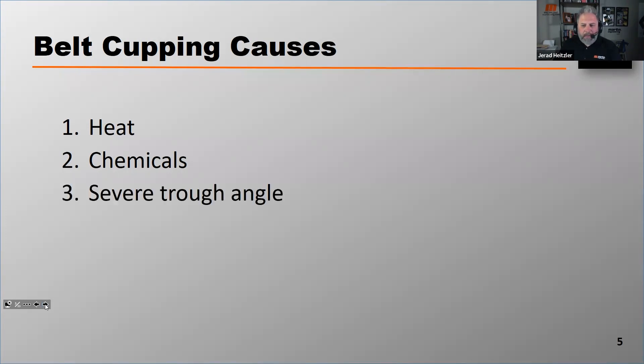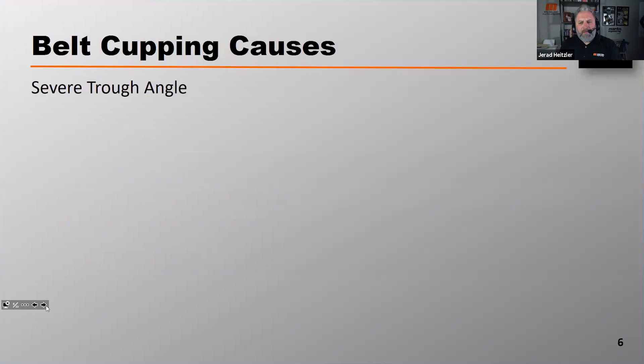Another is severe trough angle. Let me give you a little bit more about how a severe trough angle can cause the belt to cup. Severe trough angles are determined by the trough ability of the conveyor belt. Every belt that's manufactured for U.S. or Canadian markets will typically be designed to trough to 20 degrees, 35 degrees, and 45 degrees. Those are the three standard trough angles that are used in the U.S. and Canada.